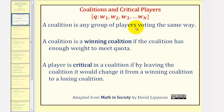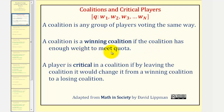In a weighted voting system, a coalition is any group of players voting the same way. A coalition is a winning coalition if the coalition has enough weight to meet quota. In the weighted voting system, q is the quota and w sub one, w sub two, and so on are the weights of each player.